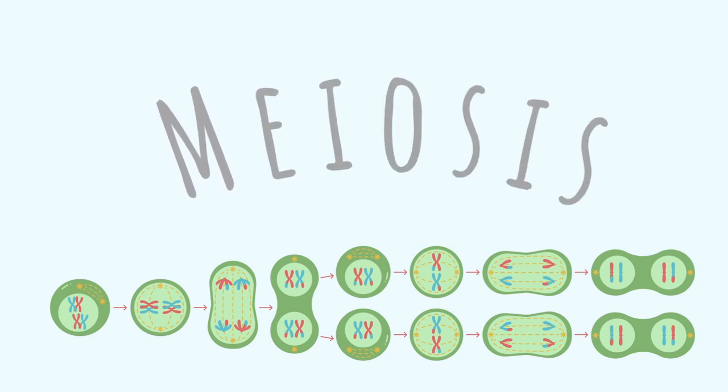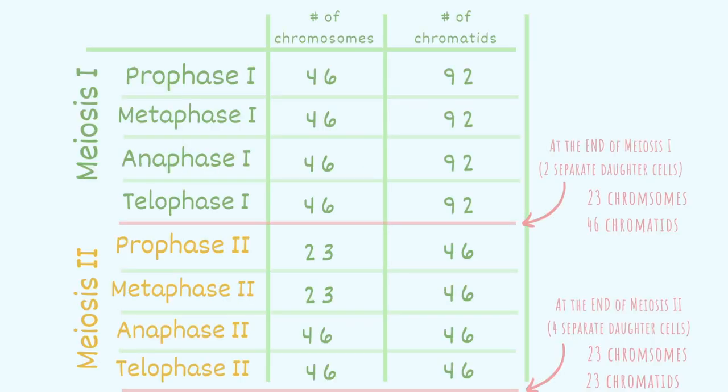Hello everyone, welcome. Today we'll be reviewing meiosis. I have this chart here that shows how many chromosomes and chromatids are present in a cell at each stage of meiosis. Make note that these numbers reflect the end of each stage. You can take a screenshot or take a picture of this before we move on.